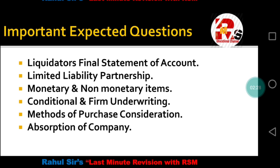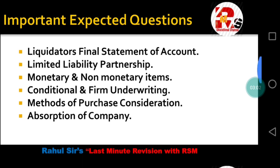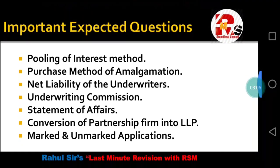The next topic is Methods of Purchase Consideration — the examiner can ask about a specific method, so prepare an overview of all methods. After that is Absorption of Company, which relates to your amalgamation chapter. You can give a theoretical base on absorption and elaborate with an example, which will be effective and help the examiner give you good marks.